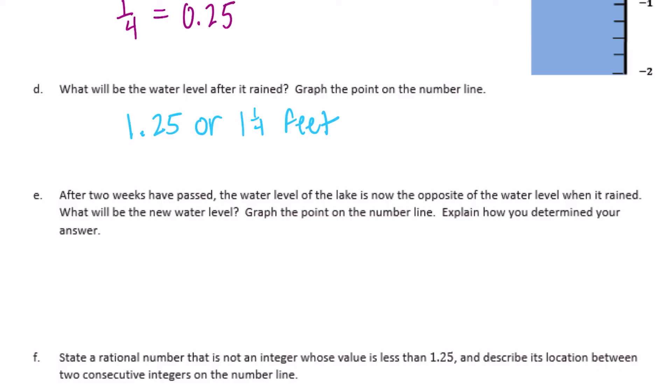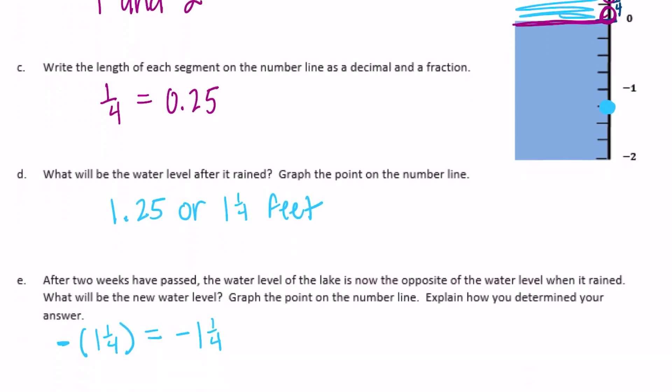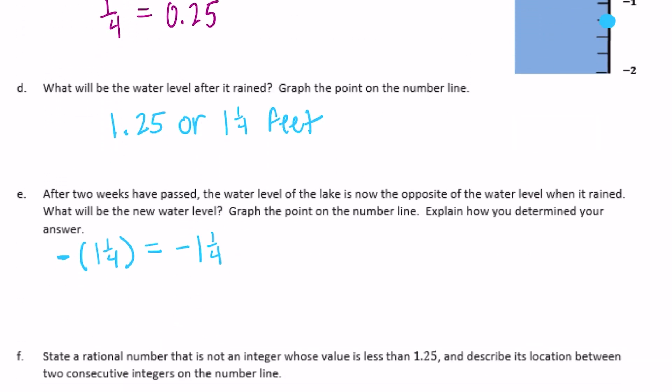Part E: after two weeks, the water level is the opposite of what it was when it rained. The opposite of one and one-fourth is negative one and one-fourth. We plot negative one and one-fourth on the number line, and that equation represents the explanation.